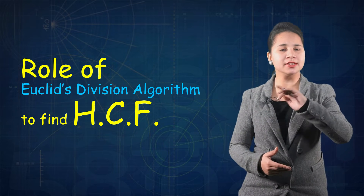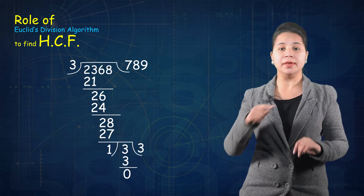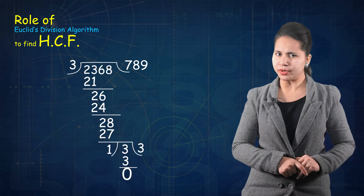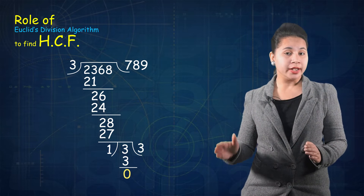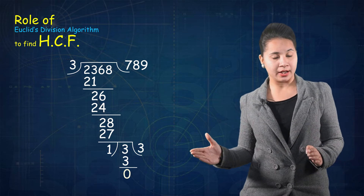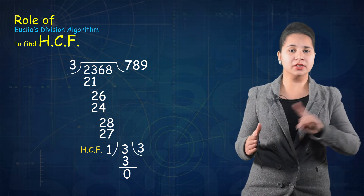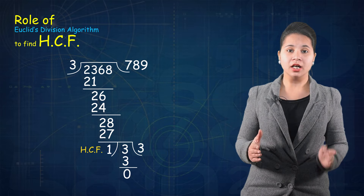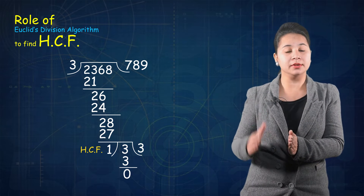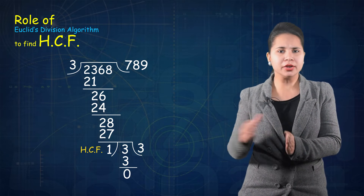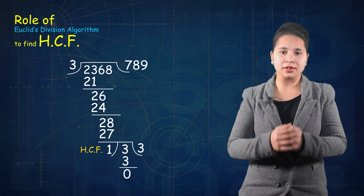Now we will discuss what role Euclid division algorithm plays in finding the HCF. We keep dividing until the remainder becomes 0. And whenever the remainder becomes 0, the divisor becomes the HCF. So we continue the long division process until the remainder becomes 0.